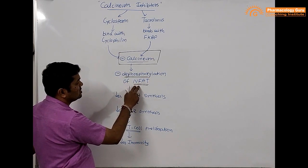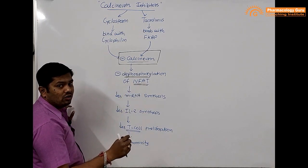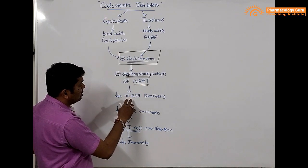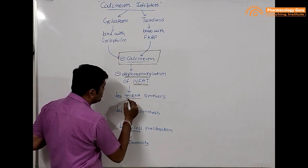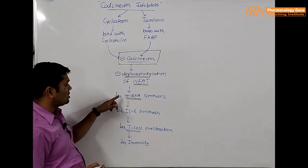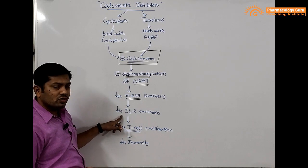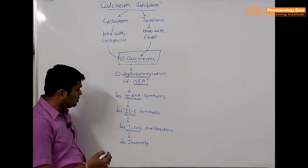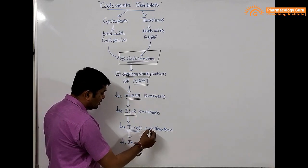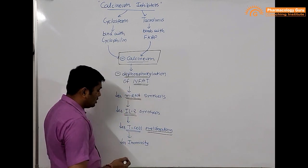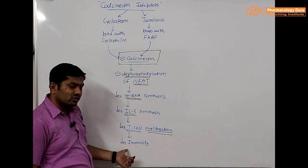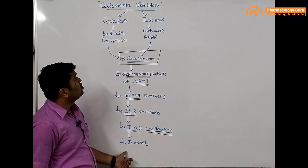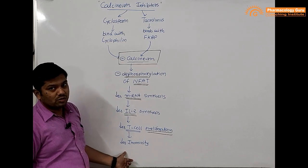Because of calcineurin inhibition, the dephosphorylation of NFAT — Nuclear Factor of Activated T cells — is inhibited. This leads to a decrease in mRNA synthesis for interleukin-2, inhibiting its transcription and translation, which decreases T cell proliferation, reduces the number of T cells, and causes a decrease in immunity. This is how calcineurin inhibitors — cyclosporine and tacrolimus — work. Thank you.